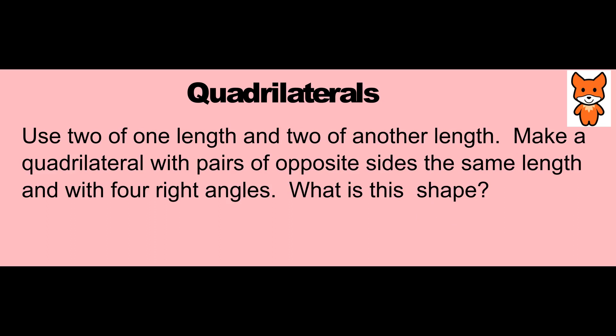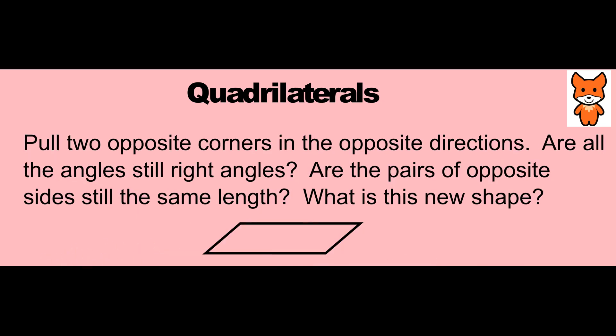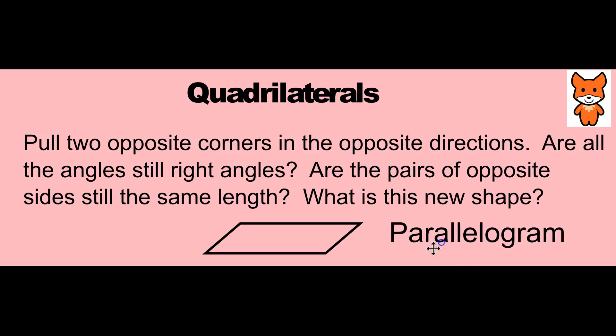If we build a shape that uses two sides of one length and two of another length, we make a quadrilateral with pairs of opposite sides the same length and with four right angles. What is this shape? This is a rectangle. If we take that rectangle and pull two opposite corners in opposite directions, we form this shape. Are the angles still right angles? No. Are the pairs of opposite sides still the same length? Yes — this side and this side are the same length; that's one pair, and this side and this side are the second pair. What is this new shape? It's a parallelogram.